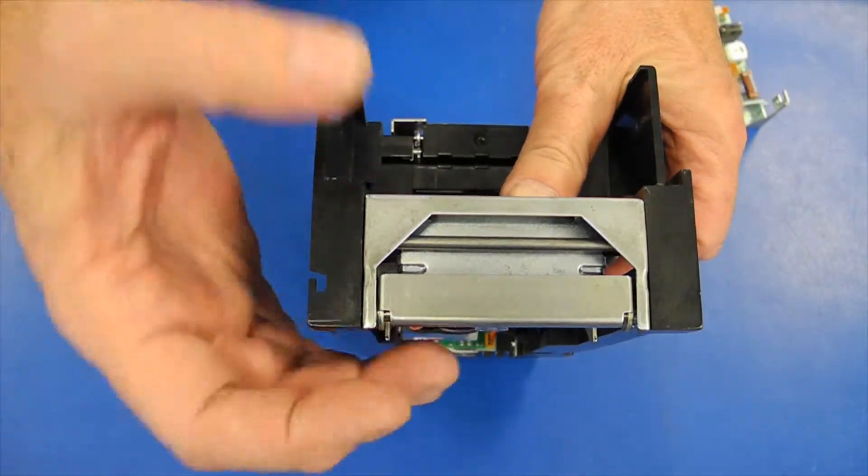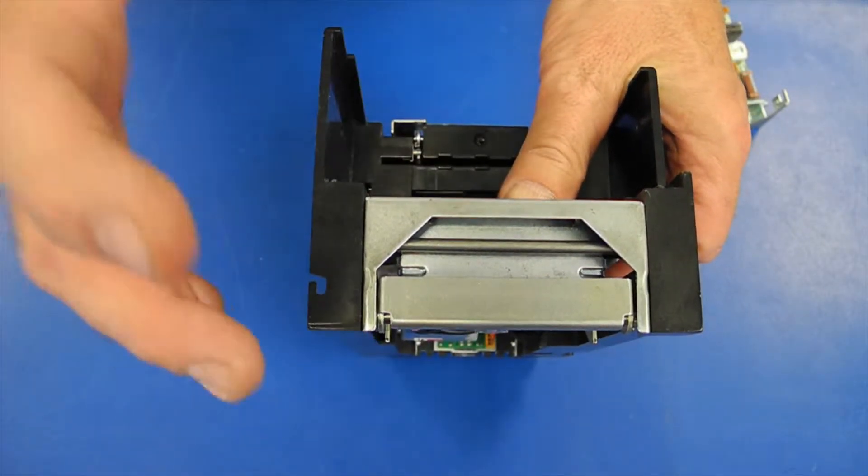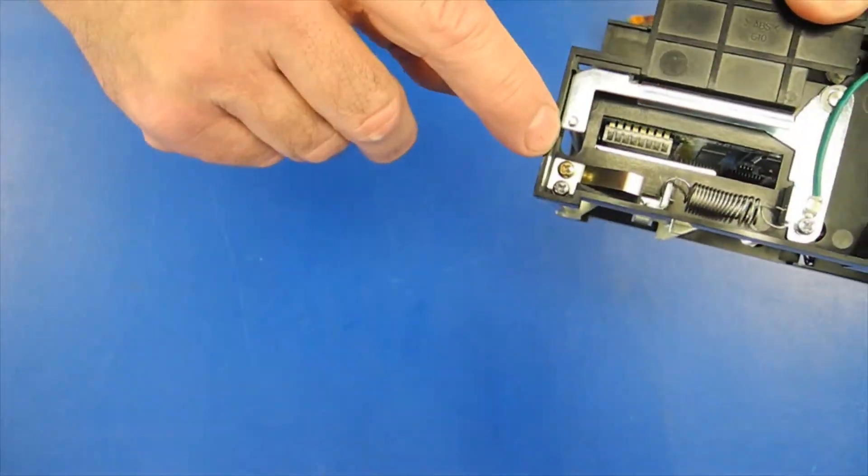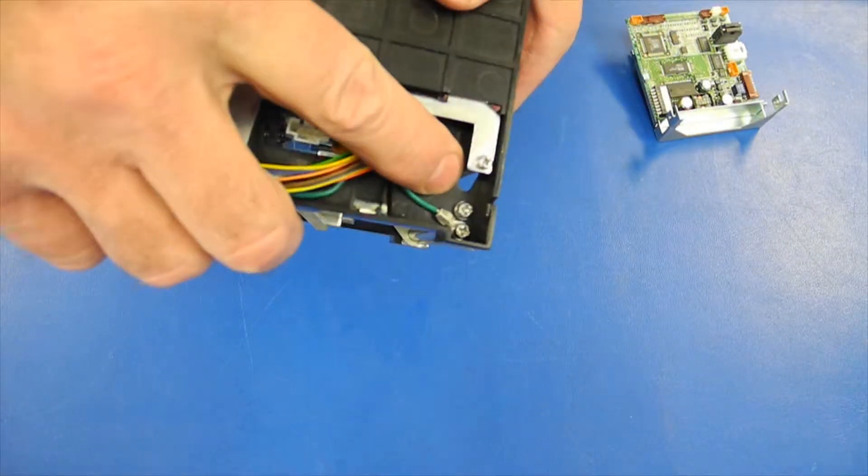For this module, you need to remove the processor board. Remove the top screw on each side in the front, plus a small screw for the rod that holds the validator head.